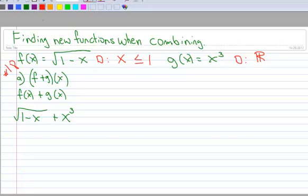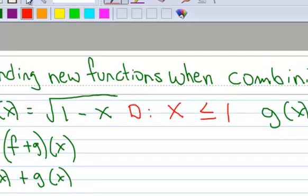And what's my domain? Well, nothing really has changed here. So this can be all real numbers, this part of it. But I still can't have x greater than 1. So my domain here is x has to be less than or equal to 1, and that's for the whole function. So you see how the domain of f(x) plays a huge role in the domain of f plus g of x.